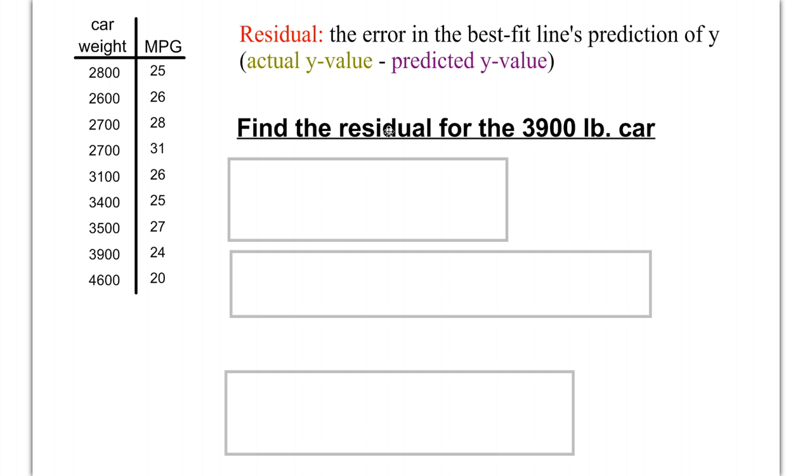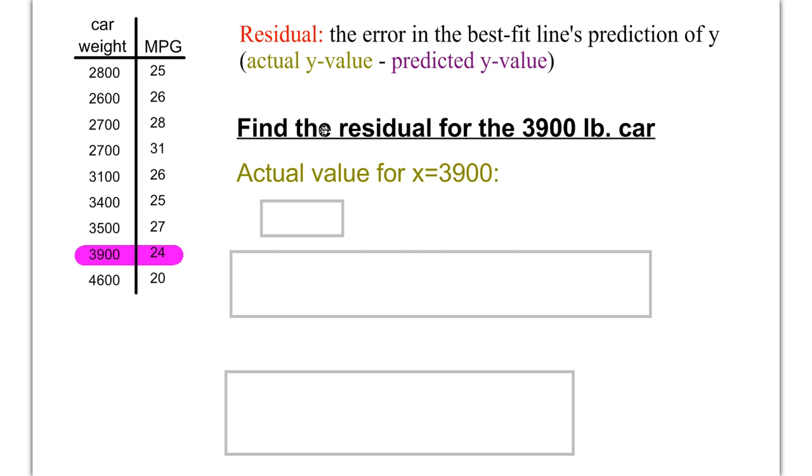Let's say you want to find the residual for the 3,900-pound car. To do that, let's identify that in the table and then work our way through. We start with the actual value for the 3,900-pound car, and that is 24 mpg.